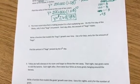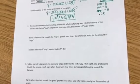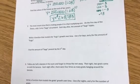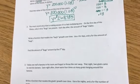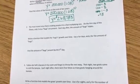So I need to write a function that models the bugs' growth over time, using X for days and Y for the amount of bugs. I also need to find the amount of bugs present by the fifth day.